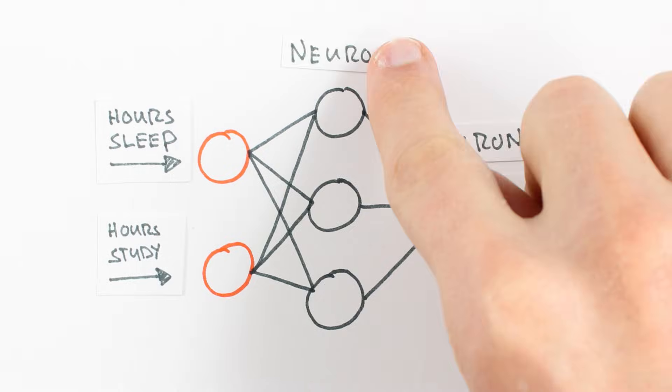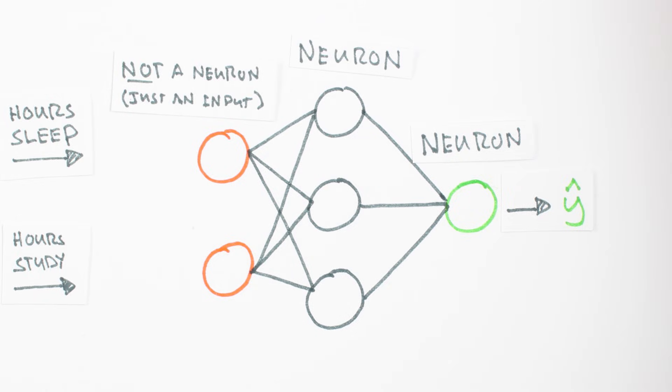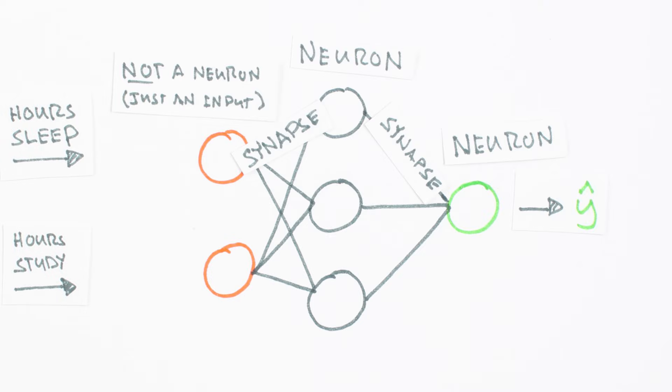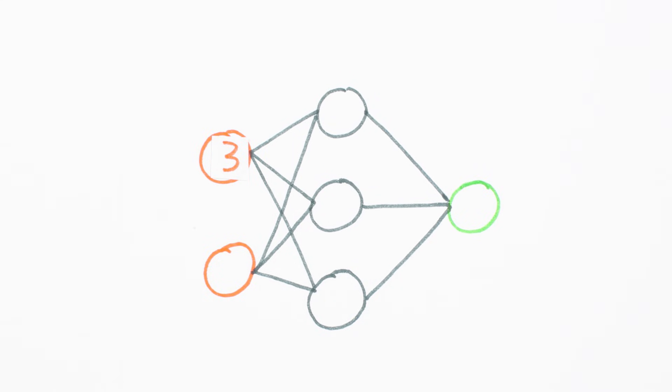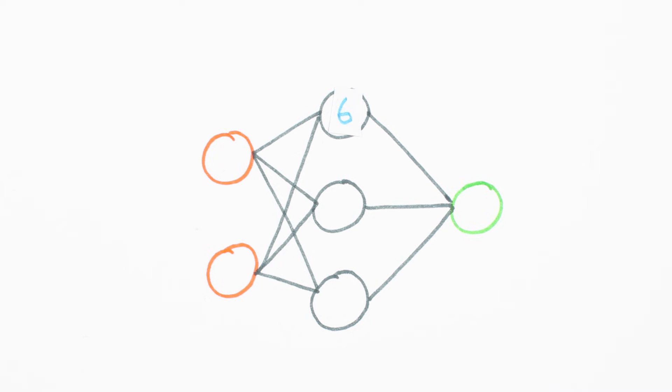In neural net visuals, circles represent neurons, and lines represent synapses. Synapses have a really simple job. They take a value from their input, multiply it by a specific weight, and output the result.